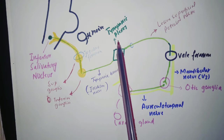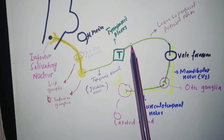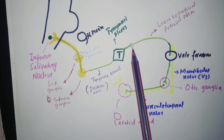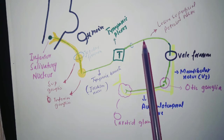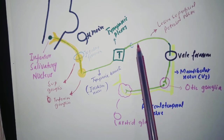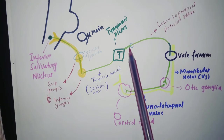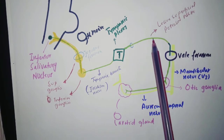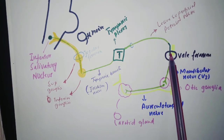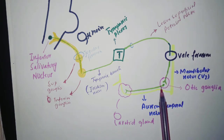From the tympanic cavity, a branch comes out called the lesser superficial petrosal nerve. This nerve re-enters the skull through an opening called the hiatus of the petrosal nerve. So the glossopharyngeal nerve leaves the skull through the jugular foramen, and the lesser superficial petrosal nerve re-enters the skull through this hiatus. From the skull, the lesser superficial petrosal nerve exits through foramen ovale, enters the otic ganglia, and post-ganglionic fibers join the auriculotemporal nerve to supply the parotid gland.